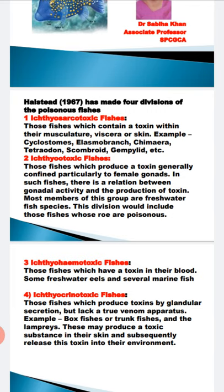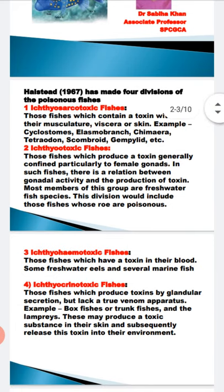Where is the true venom apparatus present? In snakes. But in ichthyocrinotoxic fishes, they are poisonous and their glands are poisonous, but they do not have a true venom apparatus. This is a very important question and it was asked in the IAS exam. Examples are the box fish, trunk fish, and lamprey. They produce a toxic substance in their skin and release it into the environment.